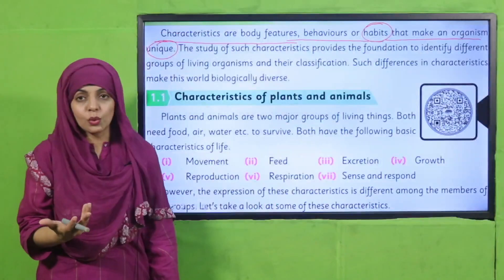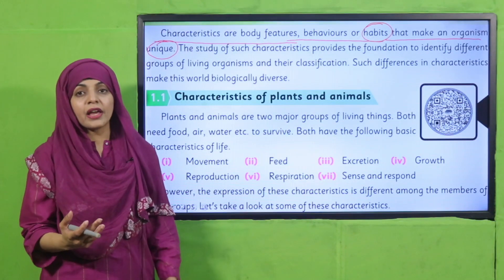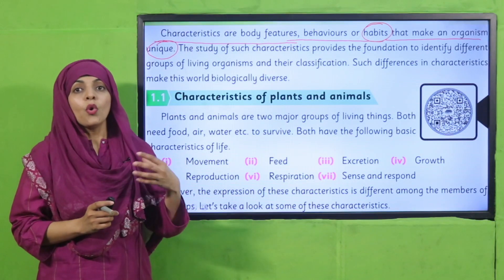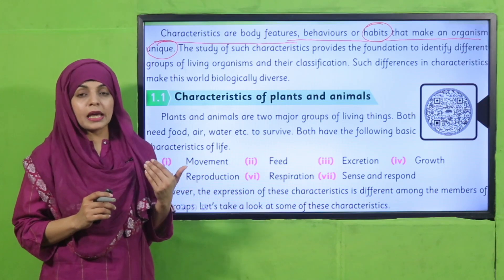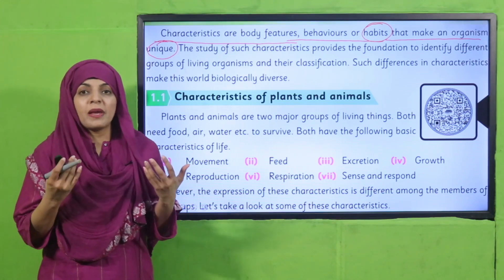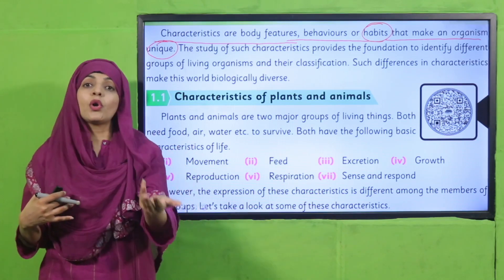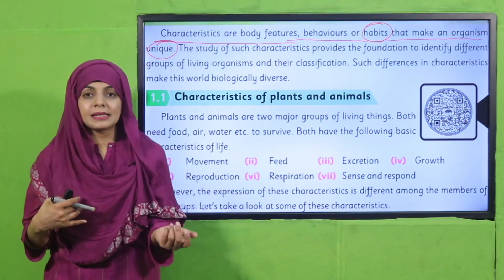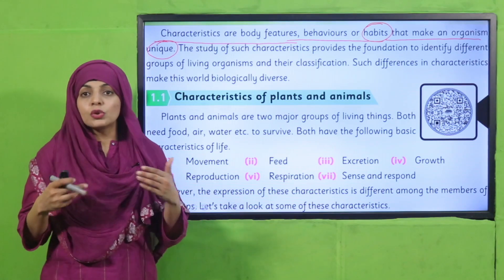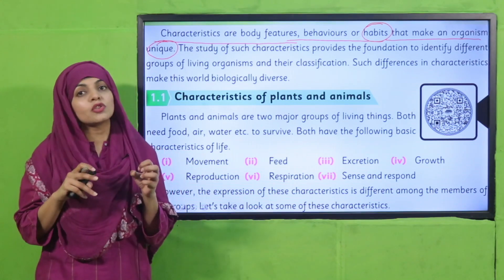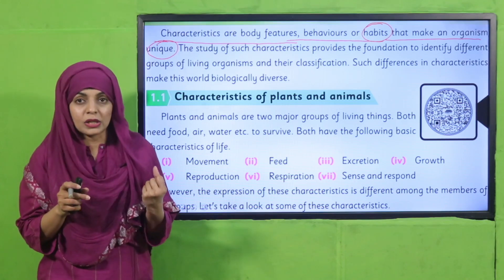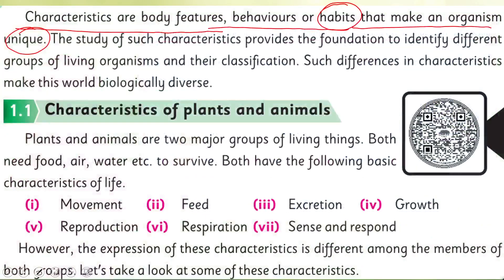Characteristics are behaviors or habits that make an organism unique or different. For example, I have different behaviors and habits — that makes me unique from you. You have different likes and dislikes, so you are different from me. These are our characteristics. Similarly, plants and animals also have their own characteristics. The study of such characteristics provides the foundation to identify different groups of living organisms and their classification.